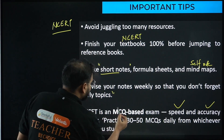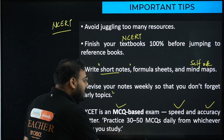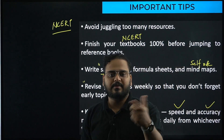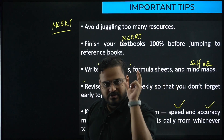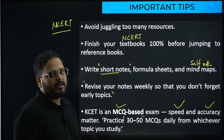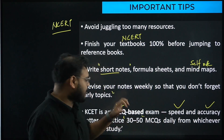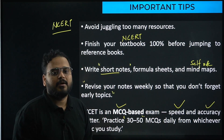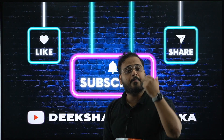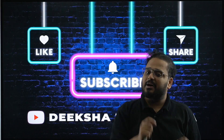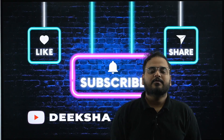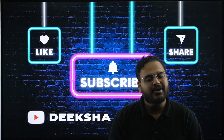The best way to achieve speed and accuracy is by writing many mock tests and practicing lots of MCQs. Practice 30 to 50 MCQs daily from the topics you studied that day — for example, if you studied chemistry and maths, mix questions from both and solve 50 MCQs that same day. Practice MCQs every single day. I hope this clears your concerns about how to start your KCET preparation journey. See you again very soon — take care, bye!